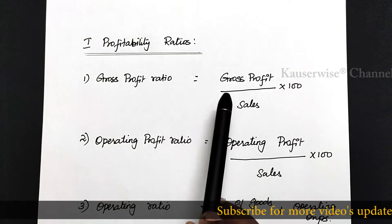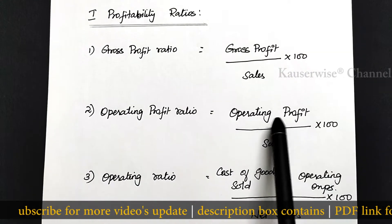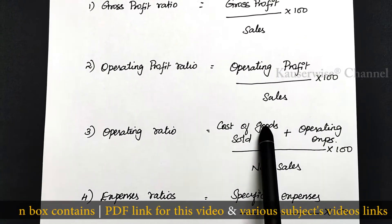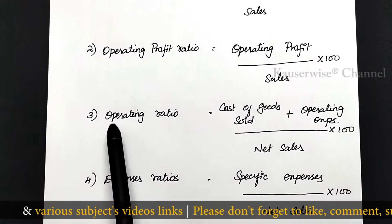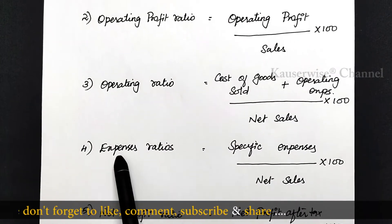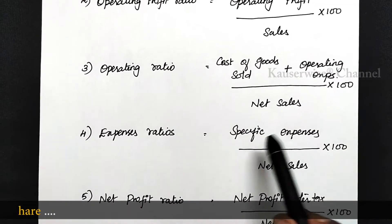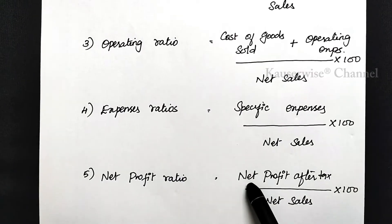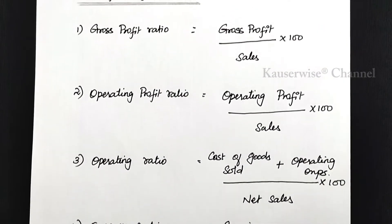Let us see the formulas for each. The first is gross profit ratio: gross profit divided by sales into 100. The second is operating profit ratio: operating profit divided by sales into 100. The third is operating ratio: cost of goods sold plus operating expenses divided by net sales into 100 — there is a difference between operating profit ratio and operating ratio. The fourth is expenses ratio: specific expense divided by net sales into 100, applied for each specific expense. The fifth is net profit ratio: net profit after tax divided by net sales into 100.